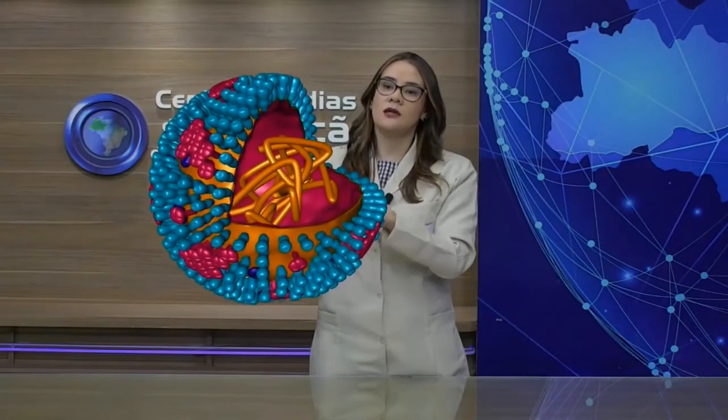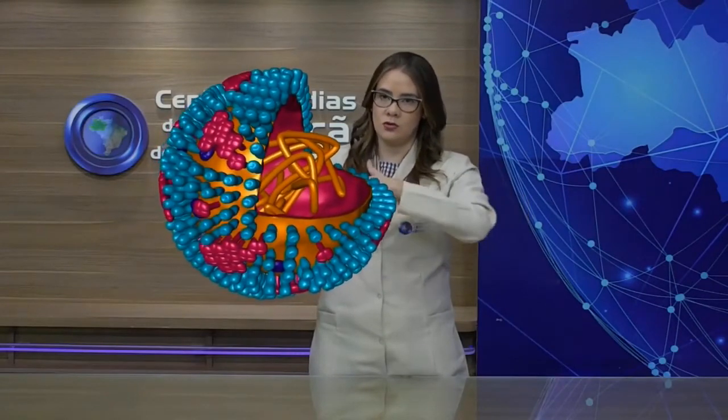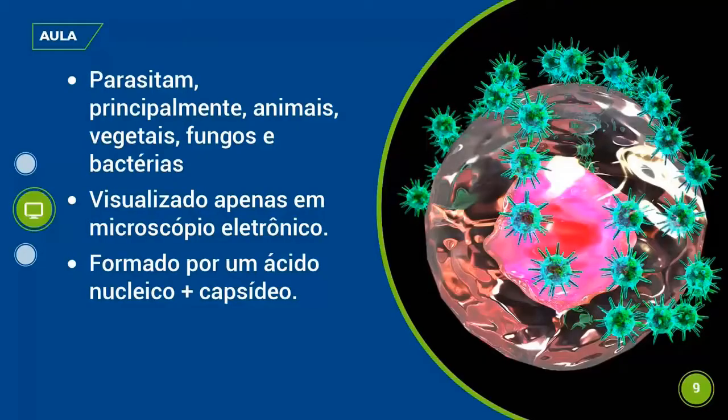Dentro do capsídeo está o material genético. O que todos os vírus vão ter é o capsídeo e o material genético — que pode ser chamado de nucleocapsídeo. Essa membrana envoltória nem todos os vírus têm. Por serem parasitas celulares obrigatórios, eles parasitam animais, vegetais, fungos, bactérias e até protozoários.